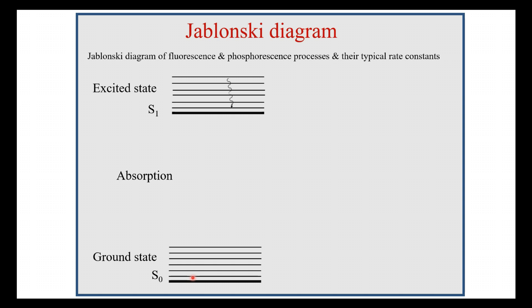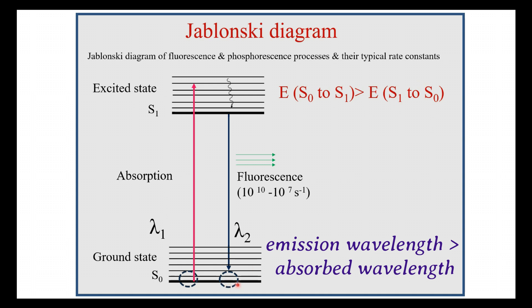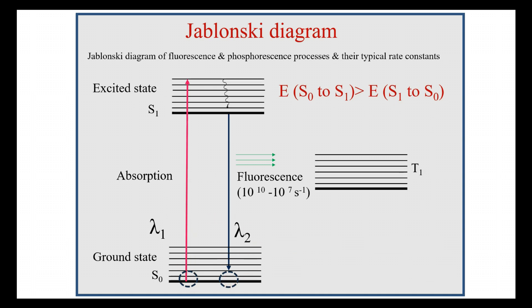This electron remains in the first electronic S1 state for some time. After this short time, the electron returns back to the ground state by emitting photons. Here, the energy is released in the form of emission. This process is called fluorescence. The emitted energy is less than the absorption energy—that is, the energy of S0 to S1 is greater than the energy of S1 to S0. Thus, the emission wavelength is higher than the absorption. This is the normal case; there is another way called upconversion that we may discuss later.